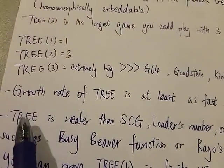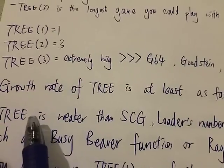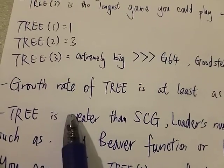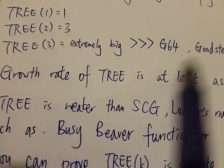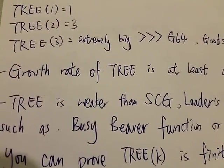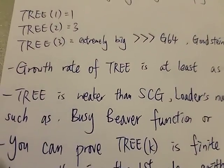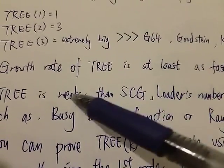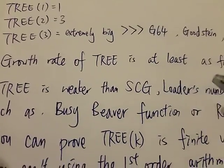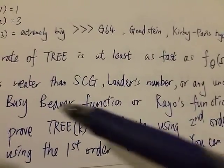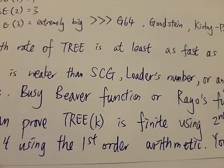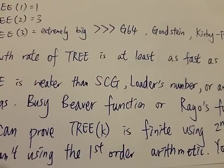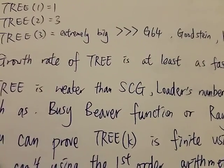This is because although the tree sequence has very big output, however it is not uncomputable. It is a computable function. So given enough time you can eventually calculate the answer. That means there's an algorithm in doing it, which means the tree sequence is computable. For busy beaver or the rayo's function, there's no algorithm in calculating the output. In other words, any non-computable function will grow faster than any computable function.